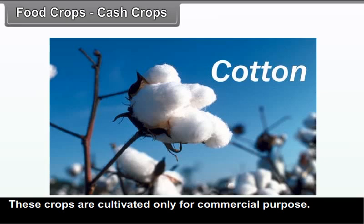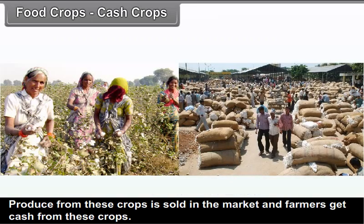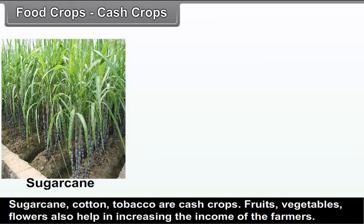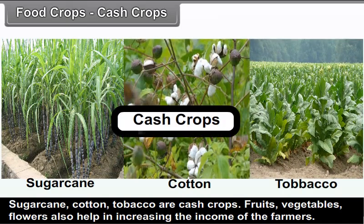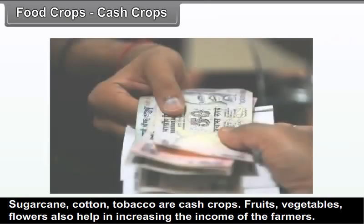Cash Crops: These crops are cultivated only for commercial purpose. Produce from these crops is sold in the market and farmers get cash from them. Sugarcane, cotton, and tobacco are cash crops. Fruits, vegetables, and flowers also help in increasing the income of farmers.